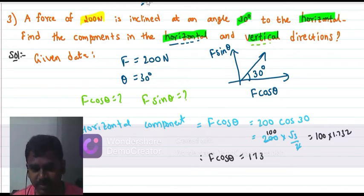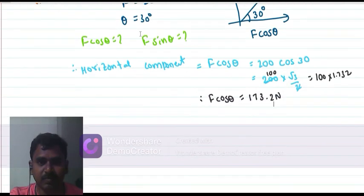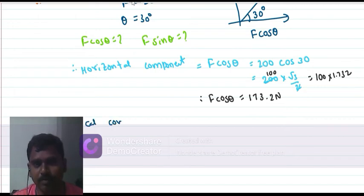Now we find the vertical component. Vertical component formula is equal to F sin theta. F is equal to 200N.